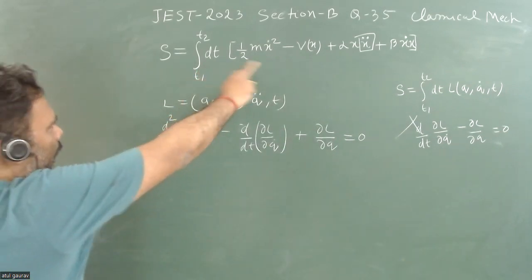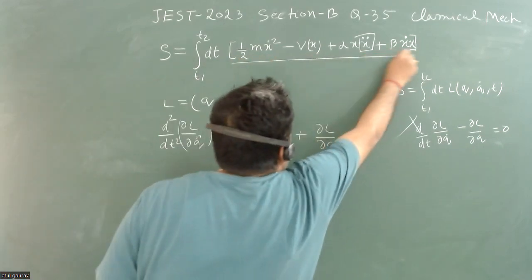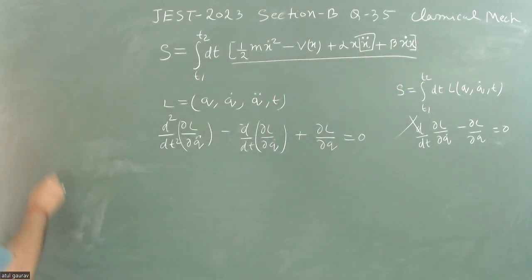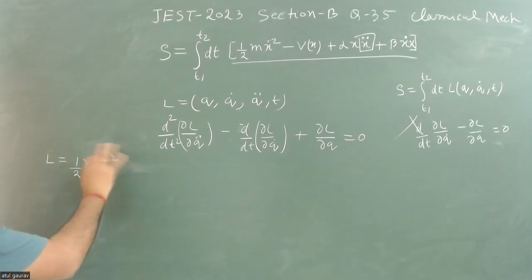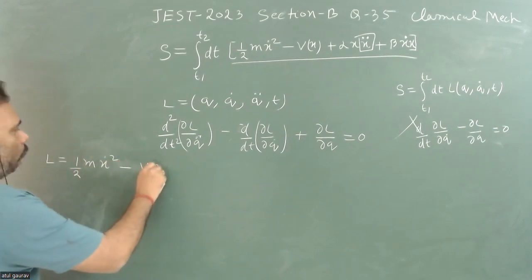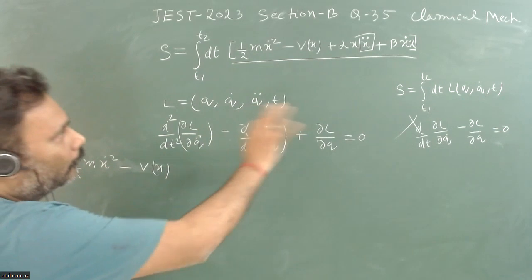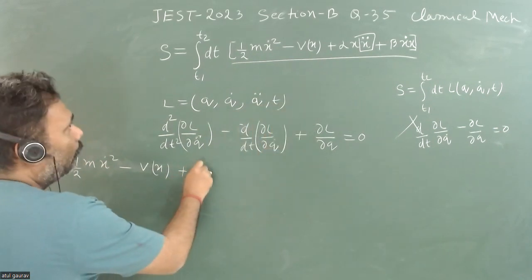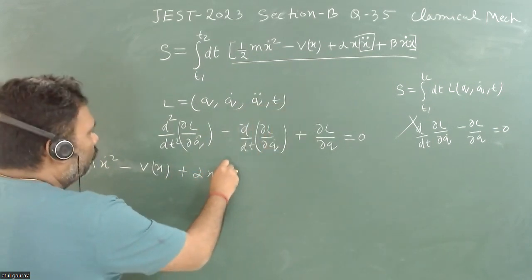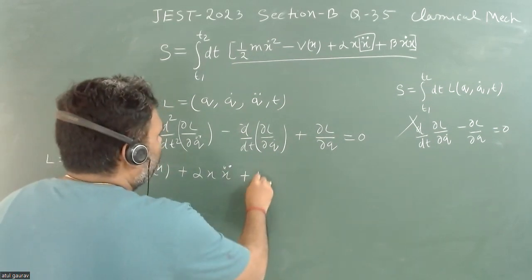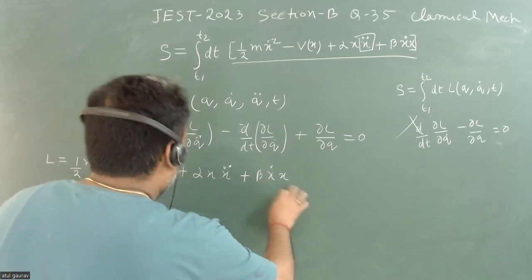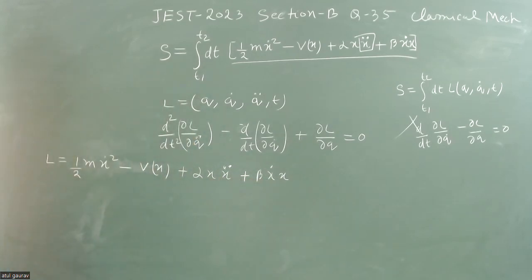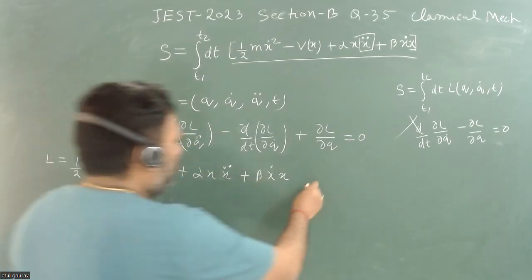We can identify our L from the action. So L is given as: half m x-dot squared — this is like kinetic energy — plus alpha x times x-double-dot, which is a coupling term, plus beta x-dot times x, which is again a coupling term. So we just use the equation of motion.